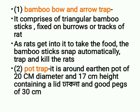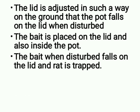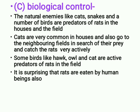The pot trap is a round earthen pot of 20 cm diameter and 17 cm height containing a lid and pegs of 30 cm. The lid is adjusted on the ground so that the pot falls on the lid when disturbed. The bait is placed on the lid and also inside the pot; when disturbed, the rat is trapped. Biological control: natural enemies like cats, snakes and birds are predators of rats. Some birds like hawk and owl are active predators of rats in the field.